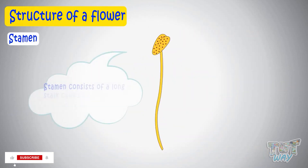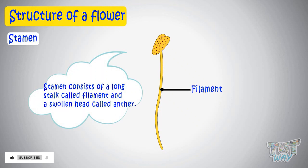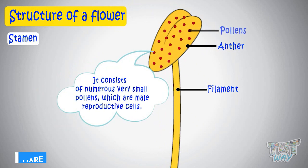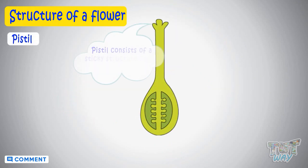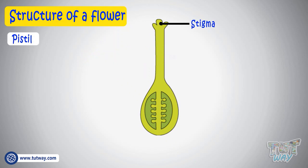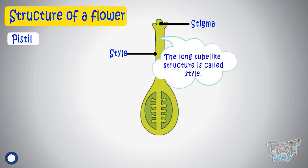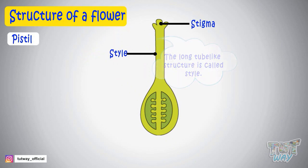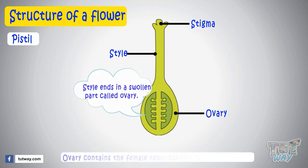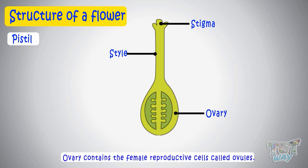The stamen consists of a long stalk called the filament and a swollen head called the anther. It consists of numerous very small pollens, which are male reproductive cells. The pistil consists of a sticky structure called the stigma, attached to a long tube-like structure called the style. The style ends in a swollen part called the ovary, and this ovary contains the female reproductive cells called ovules.